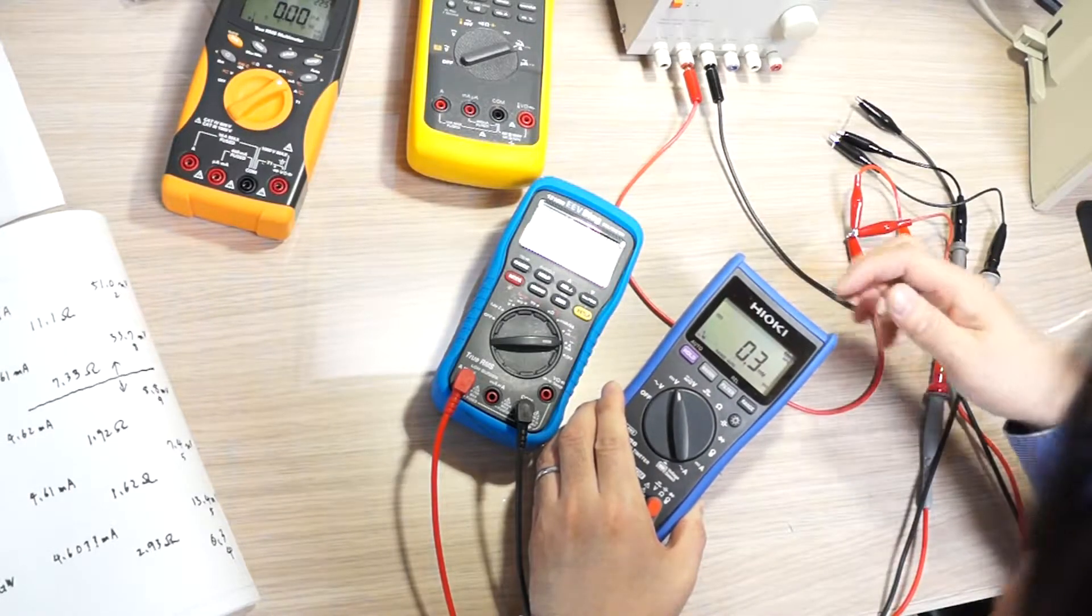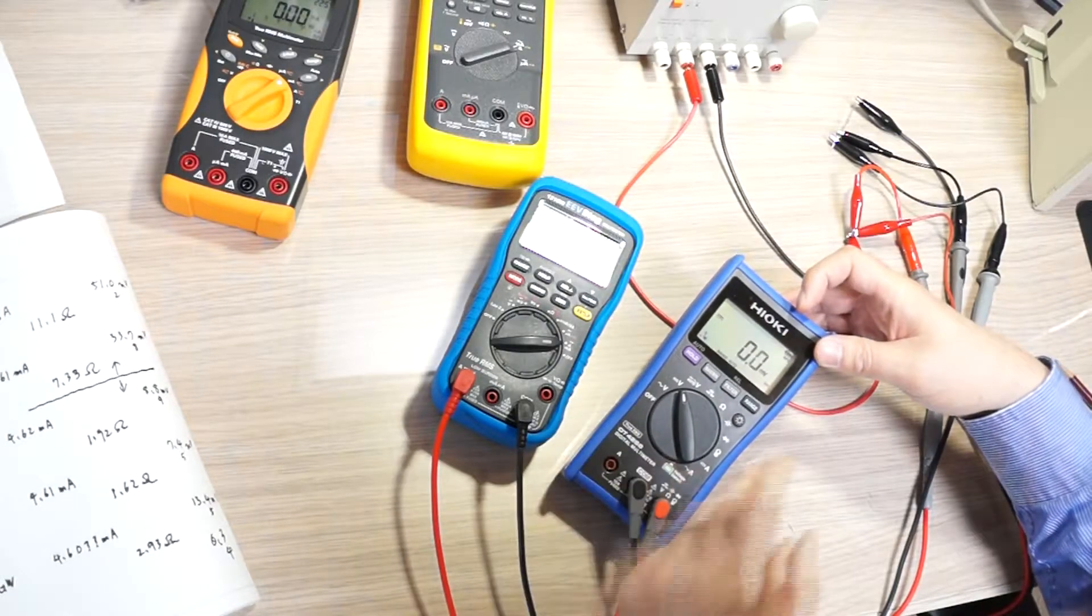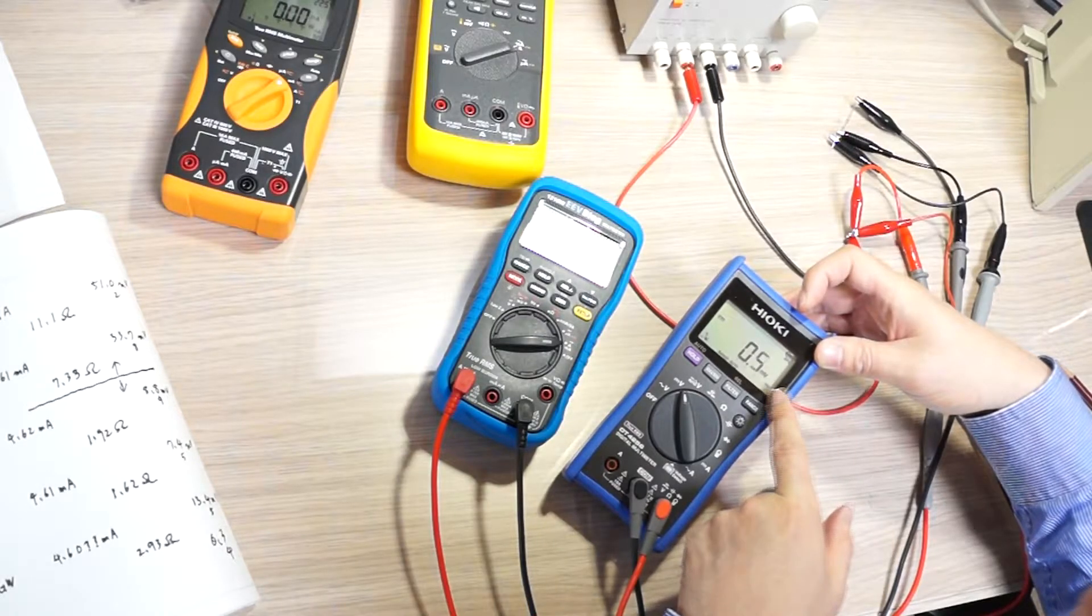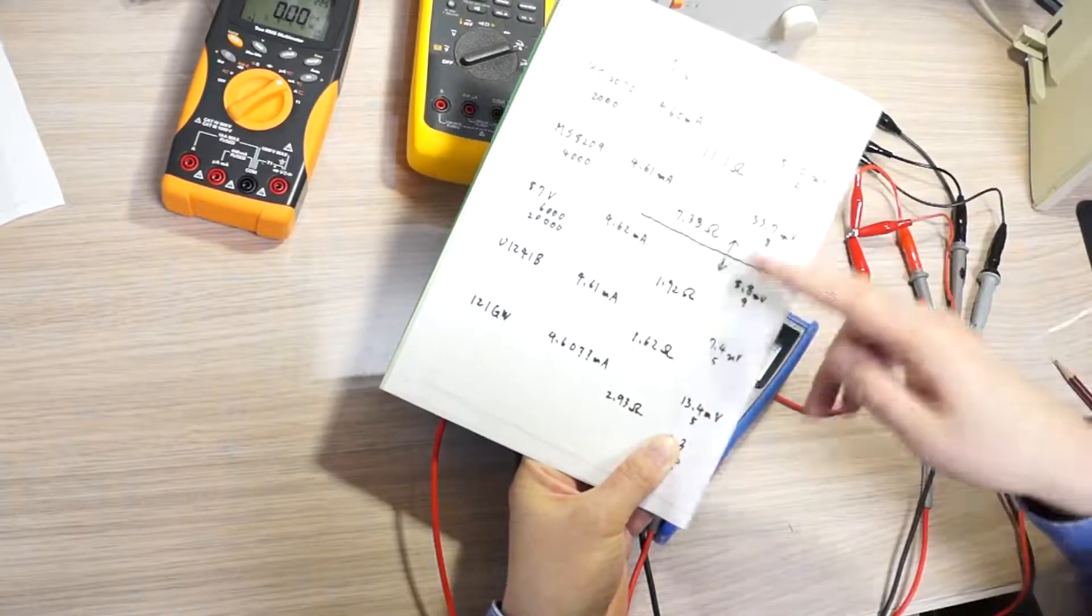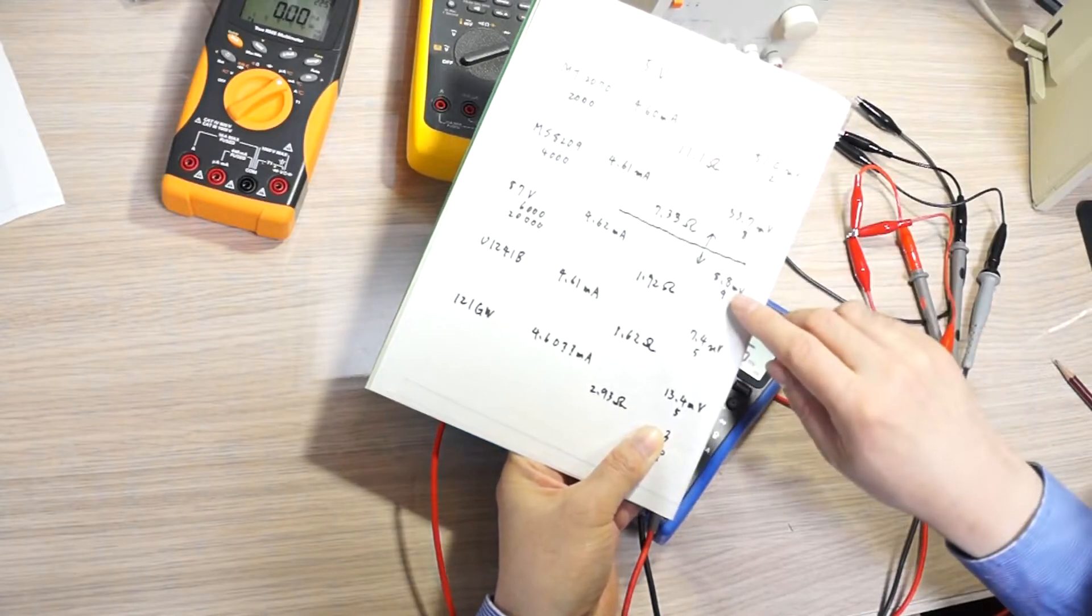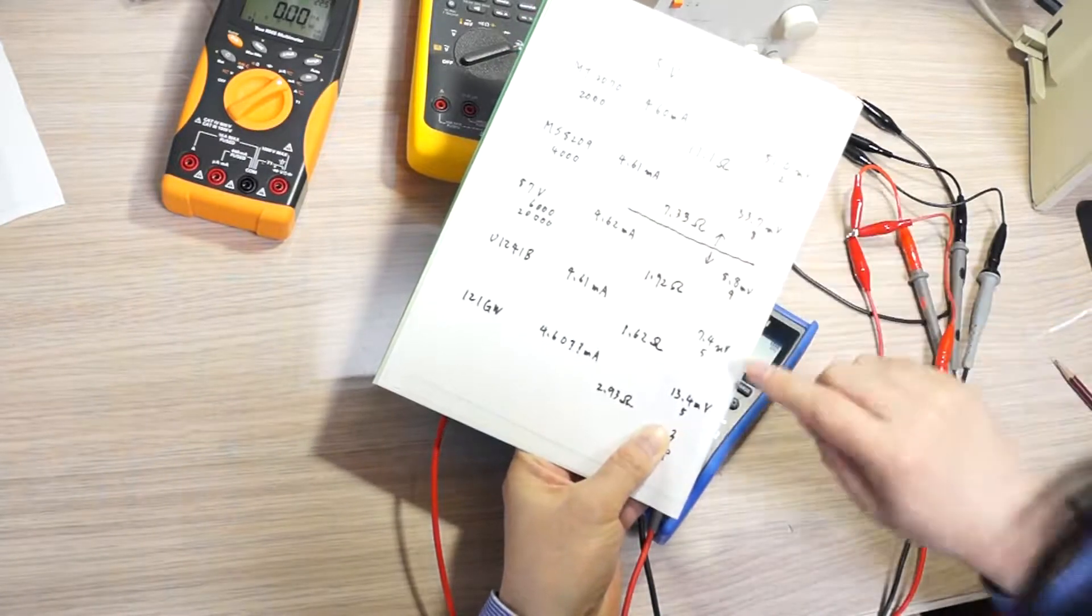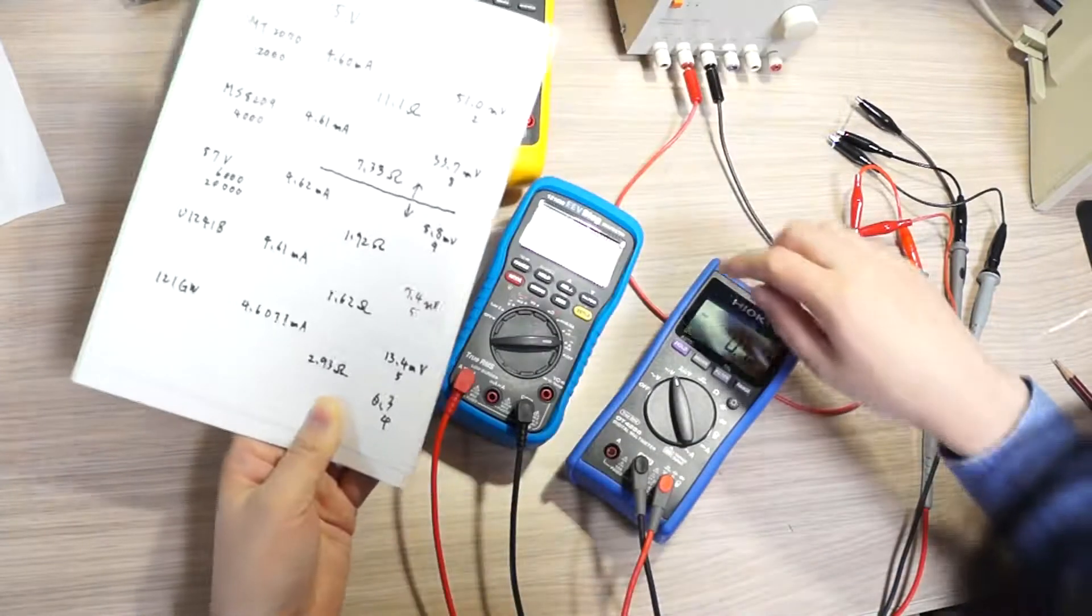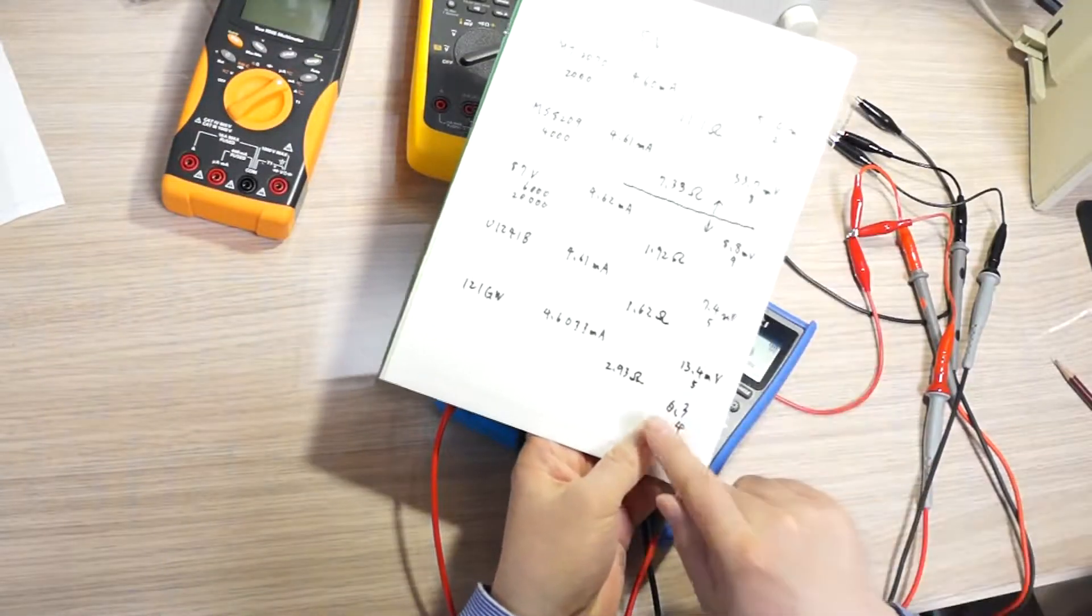So significantly better comparing even to all other multimeters. Fluke 87 5 is 8.8 or 8.9 millivolt, Keysight 7.4 7.5 millivolt, 121 GW multimeter 0.3 or 0.4.